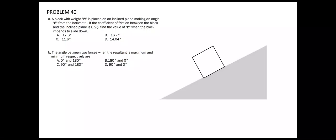A block with width W is placed on an incline plane, making an angle of phi from the horizontal. If the coefficient of friction between the block and the incline plane is 0.25, find the value of phi when the block intends to slide down.